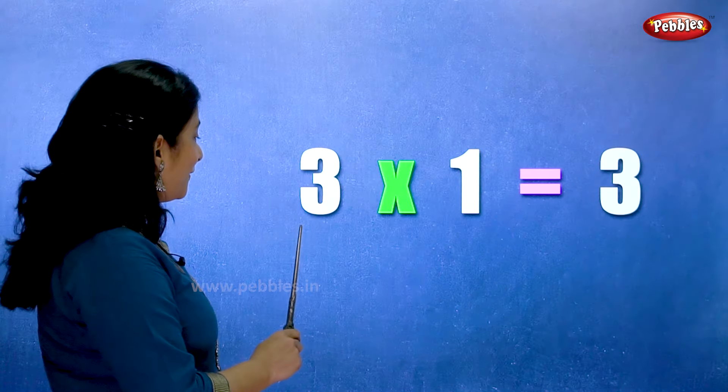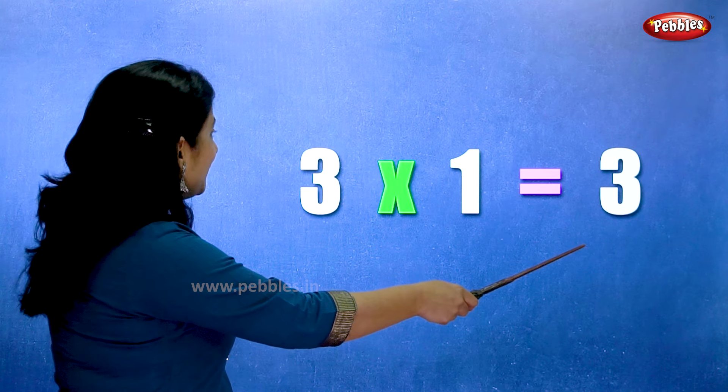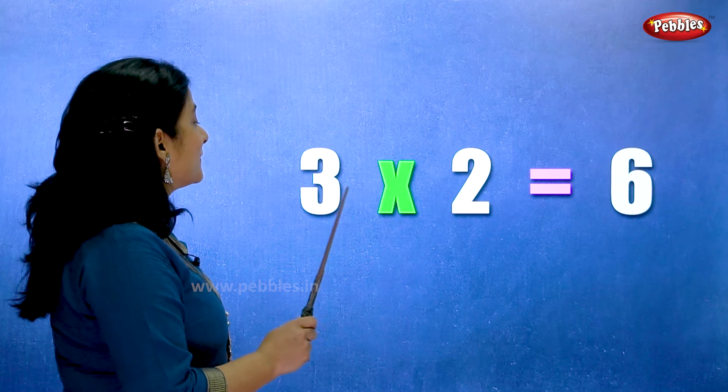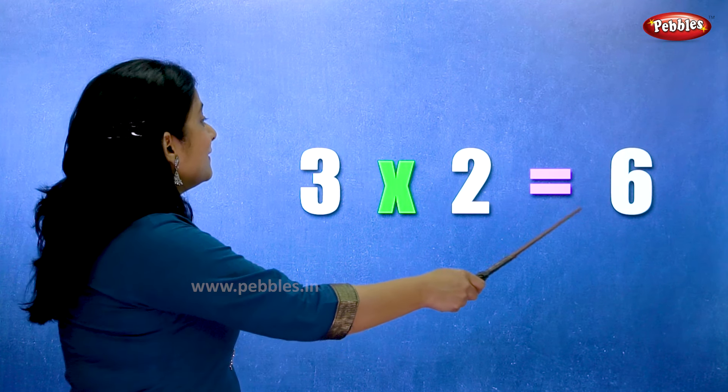So let's start. Three ones are three. Three twos are six.